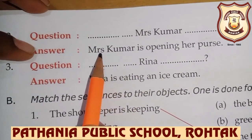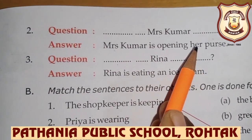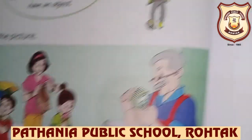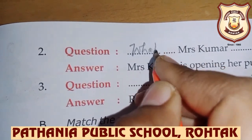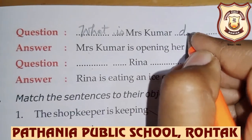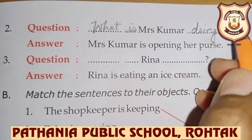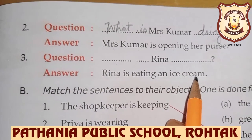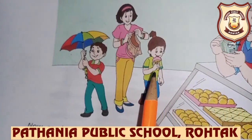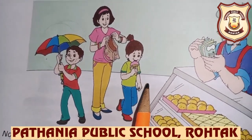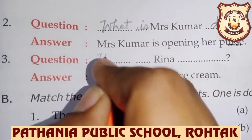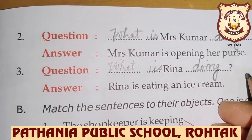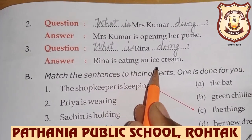Mrs. Kumar is opening her purse — Mrs. Kumar kya kar rahi hai? Apna purse open kar rahi hai, because she has to give money to the shopkeeper. So question kya ho ga? What is Mrs. Kumar doing? Answer: Mrs. Kumar is opening her purse. Next: Reena is eating an ice cream. What is Rina doing? Rina is eating an ice cream.